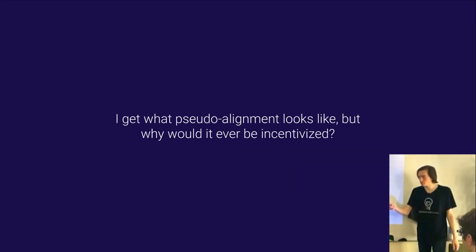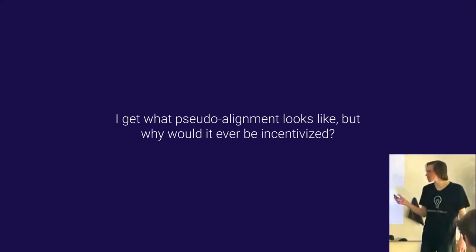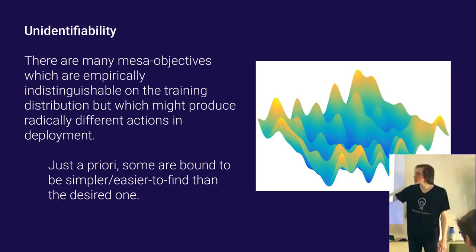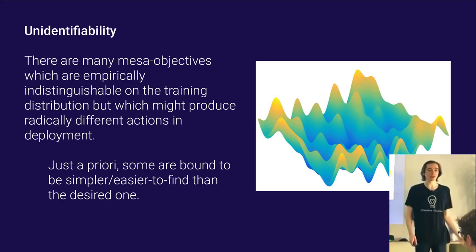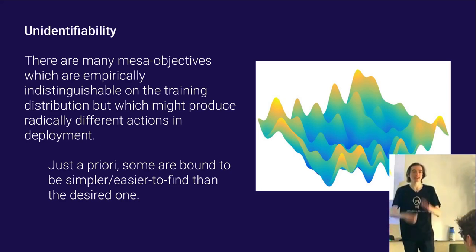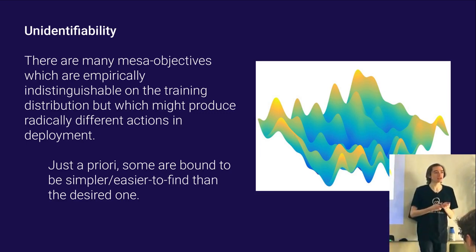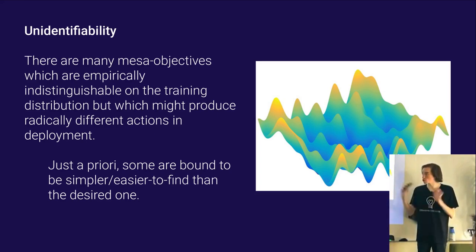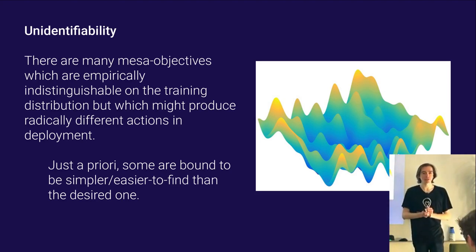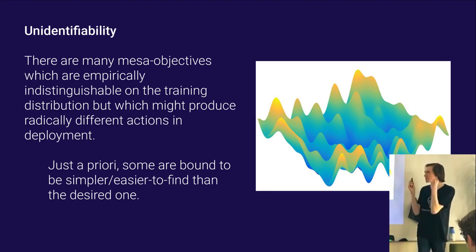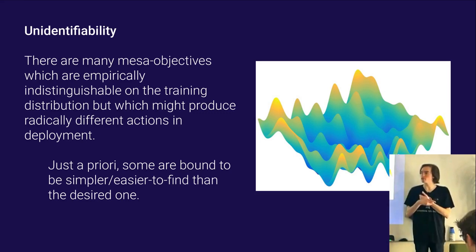There's also suboptimality pseudo-alignment, where the thing looks aligned because it's doing optimization in some bad way with a crazy objective. An example: a cleaning robot believes its objective is minimizing the number of atoms in existence, and mistakenly believes dust gets annihilated when vacuumed. When it discovers the dust just goes into the vacuum, it stops being aligned. But we're mostly focusing on the proxy case — where the model understands what's going on but cares about something correlated but not identical to what we want.